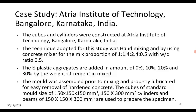Now we will look at a case study from Atria Institute of Technology, Bangalore, Karnataka, India. Cubes and cylinders were constructed there using hand mixing and a concrete mixer. The mix proportion used was 1:1.4:2.4:0.5 with a water-cement ratio of 0.5. E-waste aggregate was added in amounts of 0%, 10%, 20%, and 30% by weight of cement. The mould was assembled prior to mixing and properly lubricated for easy removal of hardened concrete.